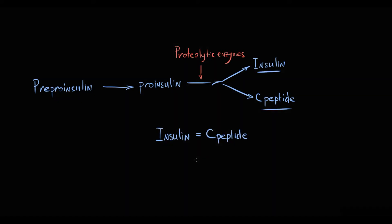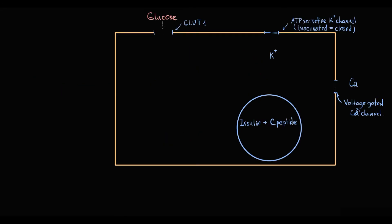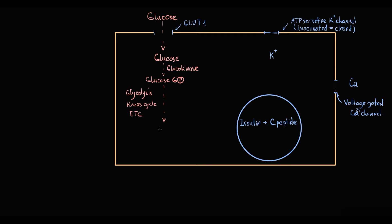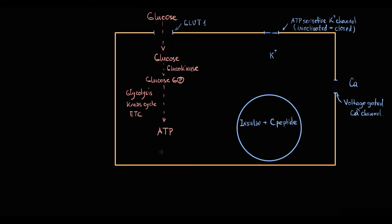When glucose from the blood enters through a GLUT2 transporter into the beta cells, glucose gets phosphorylated by glucokinase to glucose-6-phosphate. Then glucose-6-phosphate undergoes glycolysis with subsequent degradation in the citric acid cycle and electron transfer chain, resulting in production of ATP molecules.